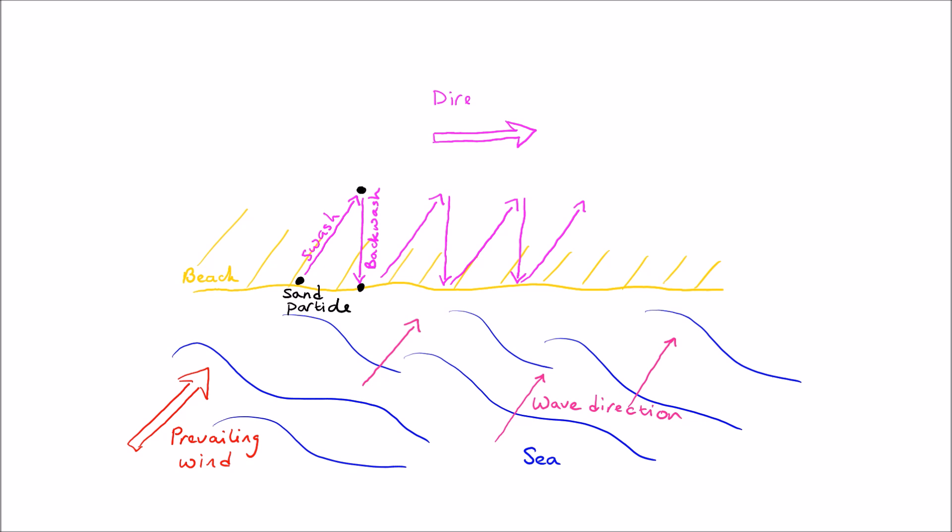So this process continues over and over again every time a wave breaks on the beach. And eventually what will happen is that the particles will move from one side of the beach, in this case the left hand side of the beach to the right hand side of the beach, following this movement of longshore drift.